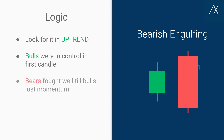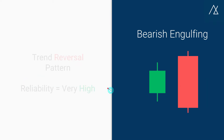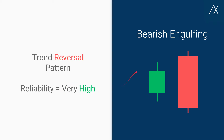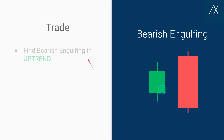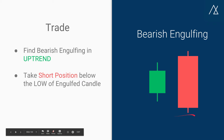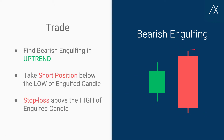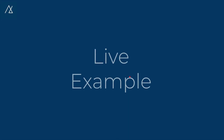Bulls were in control in the first candle, then the bears fought well until the bulls lost momentum. The more the engulfing, the better the potential downtrend. It is a trend reversal pattern and reliability is very high. To place a trade: find the bearish engulfing in an uptrend, take a short position below the low of the engulfed candle, and place a stop loss above the high of that candle.